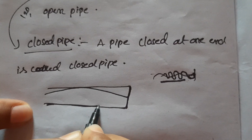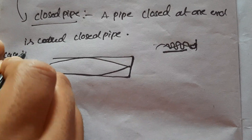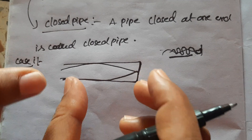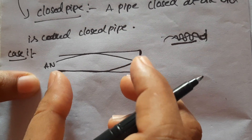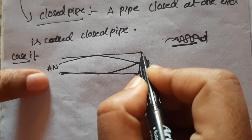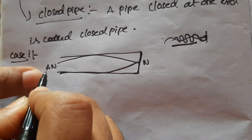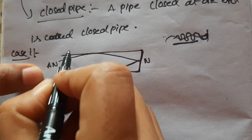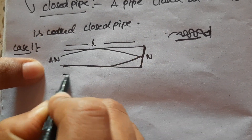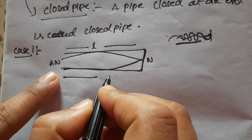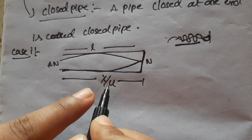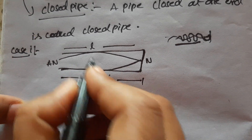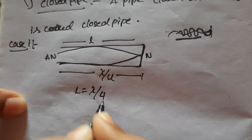Standing wave is produced. Now we will see the frequency in Case 1. The minimum possible frequency is considered. We have a closed node and an open anti-node. This is the length of the organ pipe and the wavelength of the wave, so L is equal to lambda by 4.